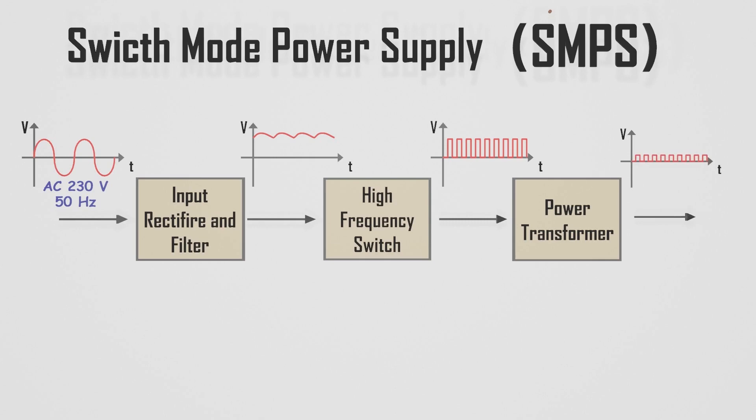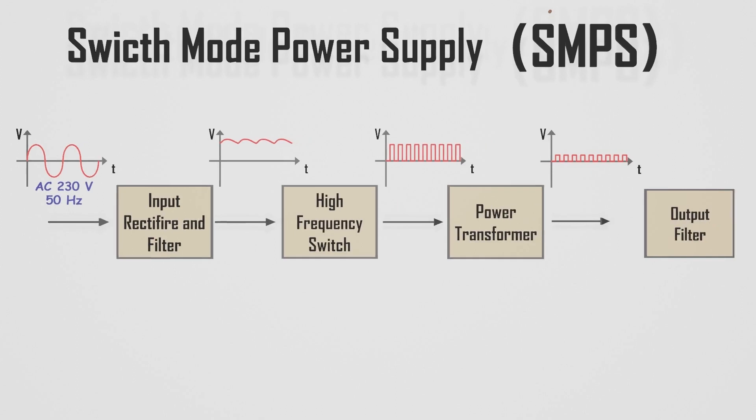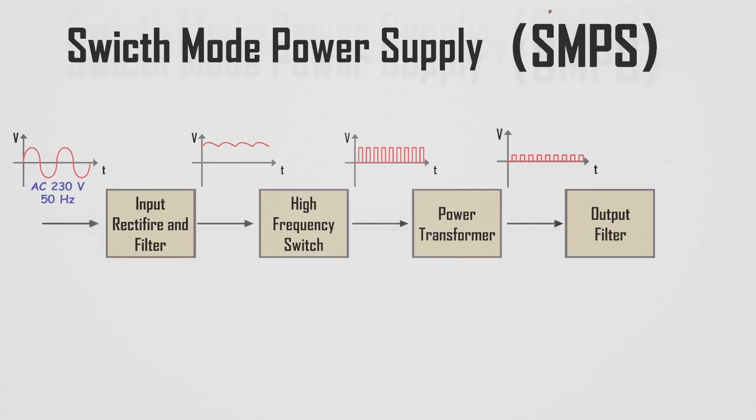You may wonder how the DC is stepped down using a transformer, but keep in mind this is not a pure DC. It changes the voltage at very high frequency. Low-voltage DC is further provided as input to the output filter unit. This simply filters out the unwanted residuals from the signal in order to provide a regulated DC signal as the output.